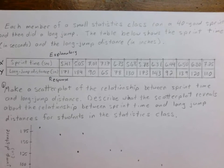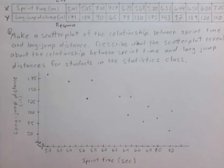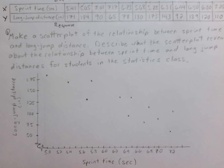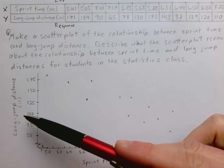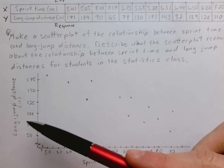So down below, that is what I have done right there. You can see on the x-axis, that is our sprint time, our explanatory variable. And on the y-axis, that is our long jump distance in inches. So I have included a label and a scale.